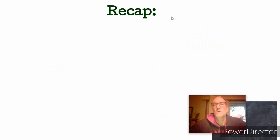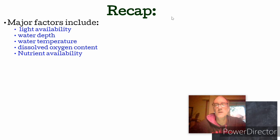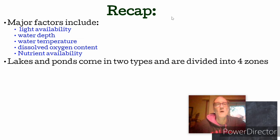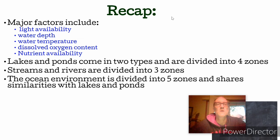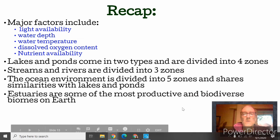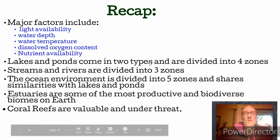To recap: the major factors that influence aquatic biomes are light availability, water depth, water temperature, dissolved oxygen content, and nutrient availability. Lakes and ponds come in two types and are divided into four zones. Streams and rivers are divided into three zones. The ocean environment is divided into five zones and shares similarities with lakes and ponds. Estuaries are very productive and biologically diverse. Coral reefs are very valuable and under threat. That wraps up Topic 1.3.